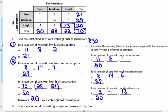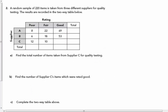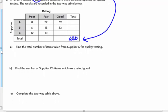On to page 31 in your packets. A random sample of 220 items is taken from three different suppliers for quality testing. The results are recorded in the two-way table below. 220 total items, I'm going to put that in here. Find the total number of items taken from supplier C for quality testing. Again, I'm missing this box, just like in the previous example.